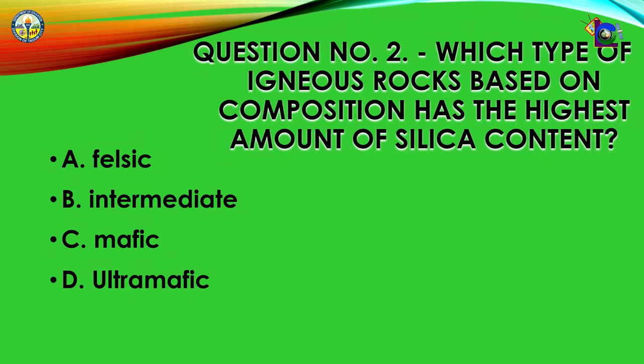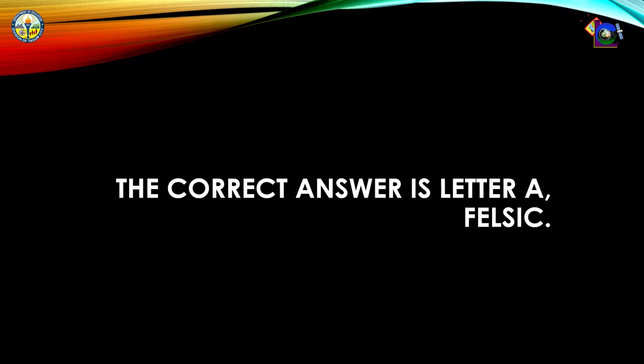Number 2: Which type of igneous rocks based on composition has the highest amount of silica content? A. Felsic, B. Intermediate, C. Mafic, D. Ultramafic. The correct answer is letter A — Felsic.